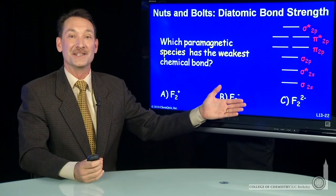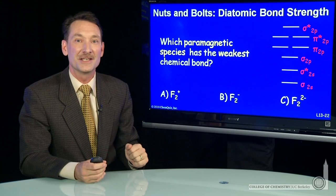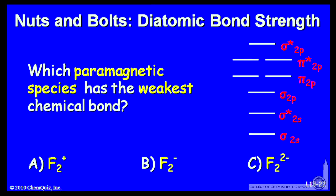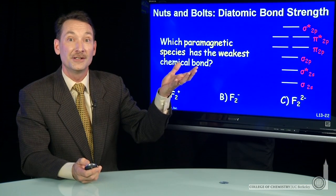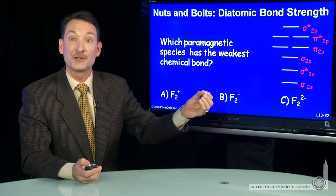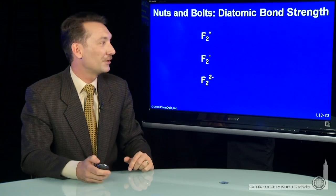Let's look at a couple fluorine species and try to determine which of the paramagnetic species has the weakest bond. So F2 plus ionized fluorine, F2 minus electron added to fluorine molecules, and F2 minus 2, two electrons added to a fluorine molecule. The way to do this is to look at the molecular orbital structure, find the bond orders to determine which has the weakest bond, and then check to see if they're paramagnetic.